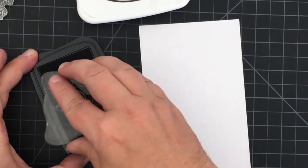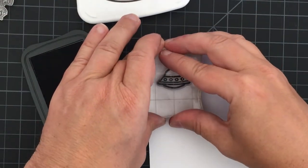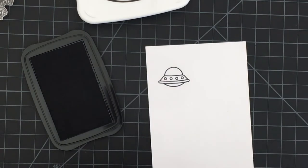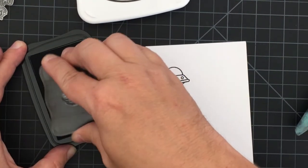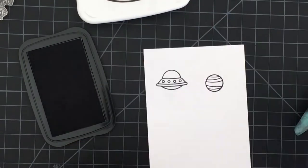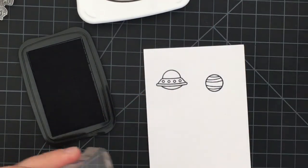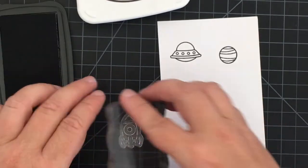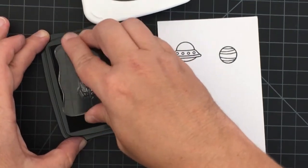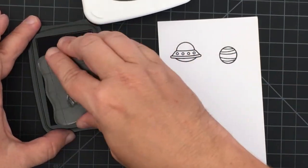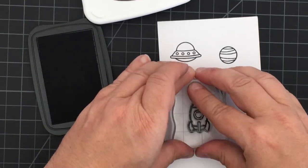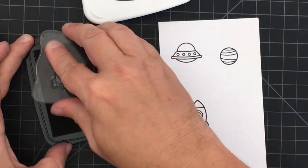Now it is time to stamp out the images. I am using two sets from Lawn Fawn: Beam Me Up and Out of This World. I'm stamping that with Memento Tuxedo Black ink because I will be using alcohol markers to color those in, and that is a safe ink to use with alcohol markers.